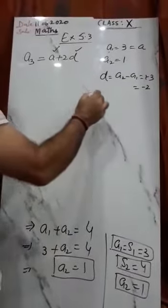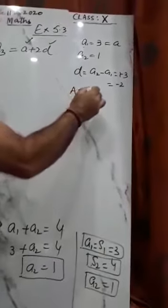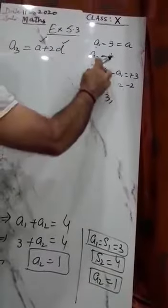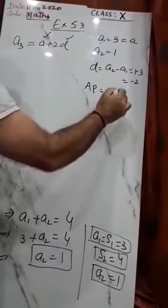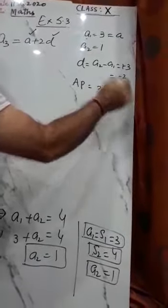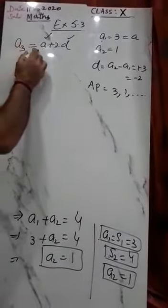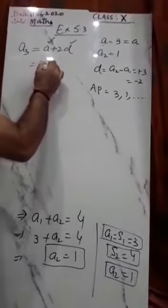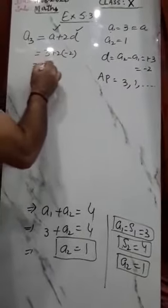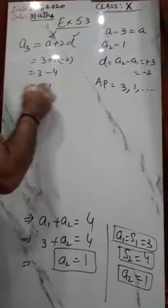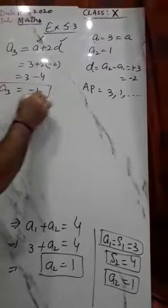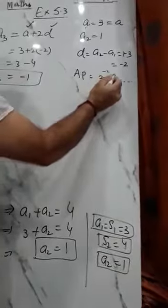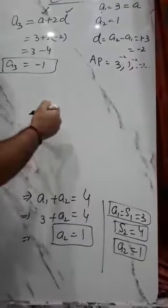The AP will be: A1 = 3, A2 = 1, with difference of -2. So A3 = A + 2D = 3 + 2×(-2) = 3 - 4 = -1. The third term is -1. Alternatively: 3 - 2 = 1, then 1 - 2 = -1. So the third term is -1.